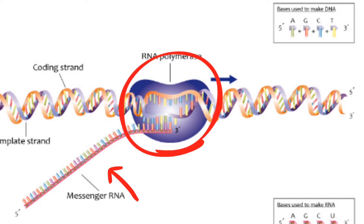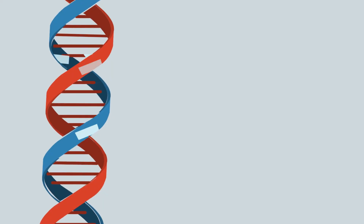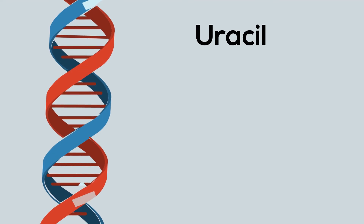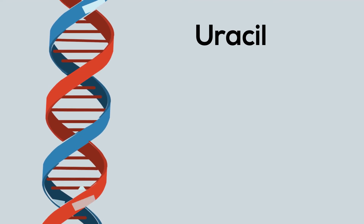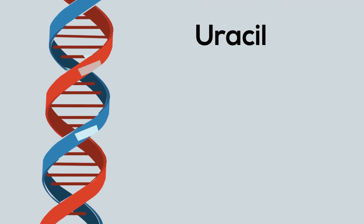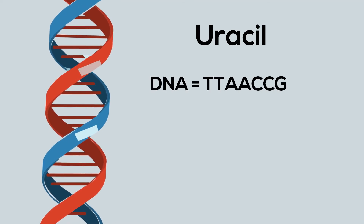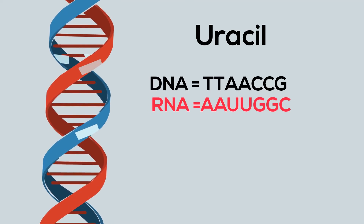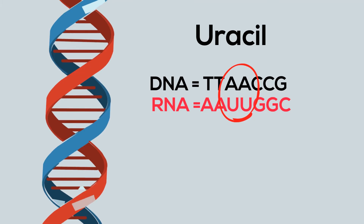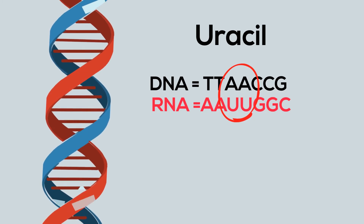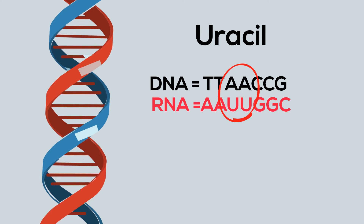The messenger RNA is similar to DNA but does not have the nucleotide thymine. Instead, it has uracil. The uracil attaches to the adenine. Here is how the messenger RNA would attach to the following strand of DNA. Notice that for the A, instead of a T underneath, you have a U.